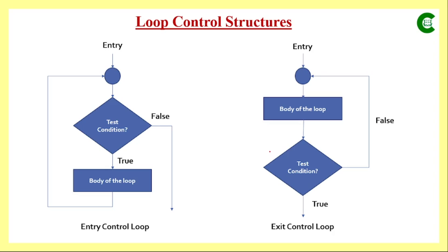In the case of an exit control loop, the body of the loop is executed once first, and then we check the test condition. If the test condition is false, the loop is repeated and those statements are executed again. If the result is true, the loop is terminated and the statements after the loop are executed. So the test condition is checked after the body, unlike entry control loop where it is checked before.